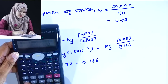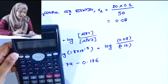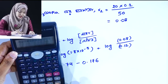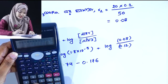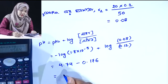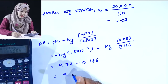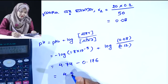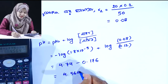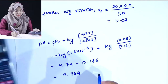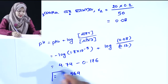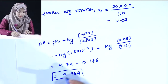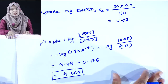This is equal to 4.74 minus 0.176, giving 4.564. This is the pH of the solution.